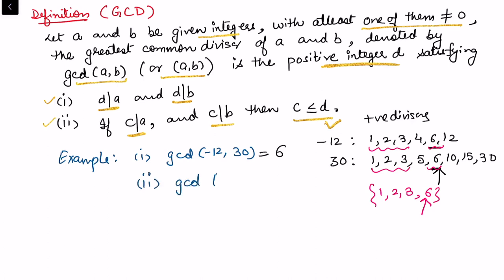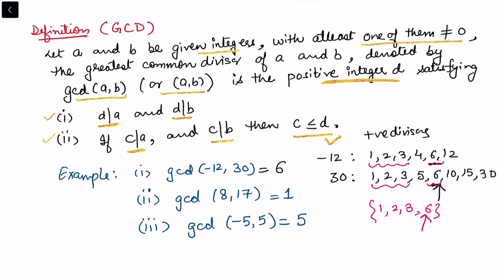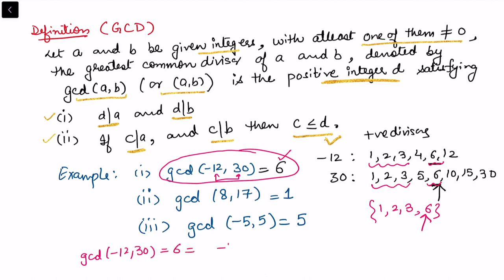In another example, gcd(8, 17) = 1. Similarly, gcd(−5, 5) = 5. We know that it is always possible to write the greatest common divisor as a linear combination of the integers. For instance, gcd(−12, 30) = 6 can be written as a linear combination of −12 and 30: multiplying 30 by 1 and −12 by 2 satisfies the equation, giving integers 2 and 1.